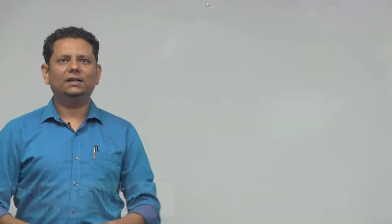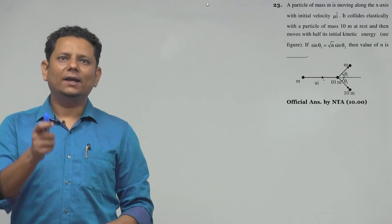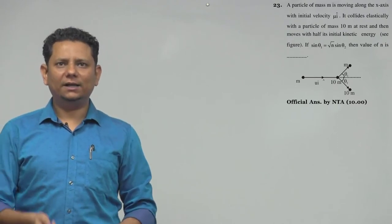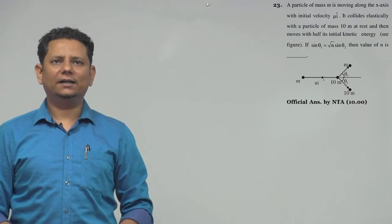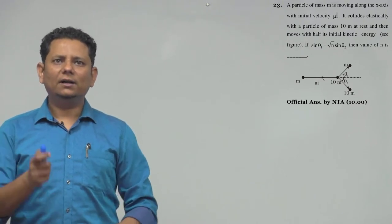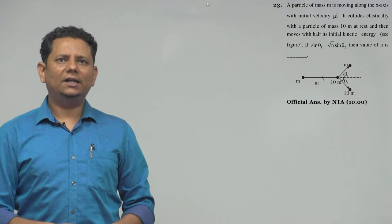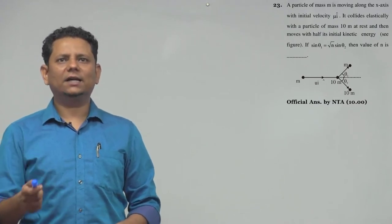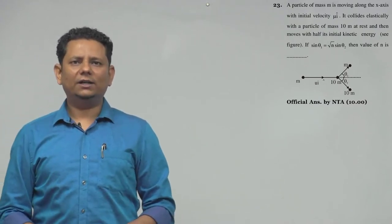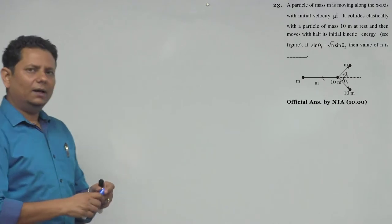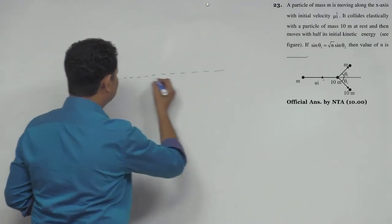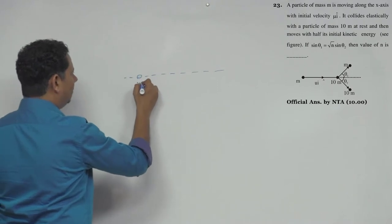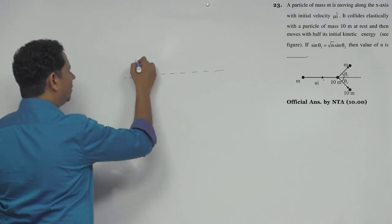Next question: A particle of mass m is moving along the x-axis with initial velocity u i-cap. It collides elastically with a particle of mass 10m at rest and then moves with half the initial kinetic energy as shown in the figure. If sin θ₁ equals √n times sin θ₂, find the value of n. This is an integer type question.